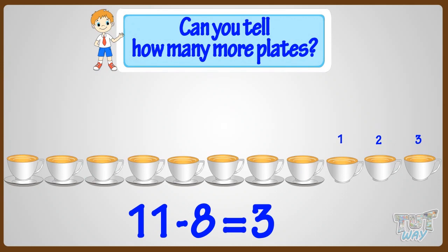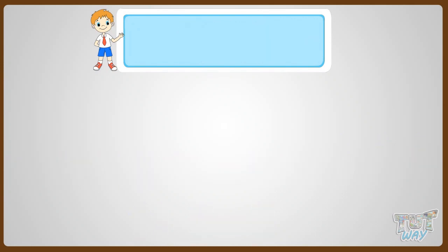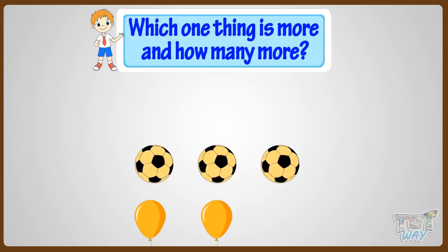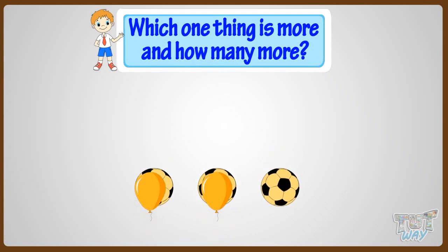So kids, what have we learned? We have learned when one thing is more than the other, find out how many more by subtracting the smaller number of things from the larger number of things. Good.